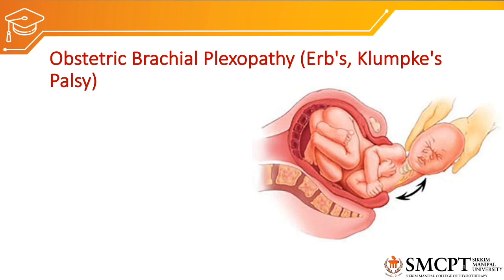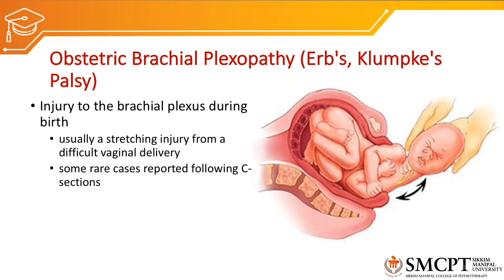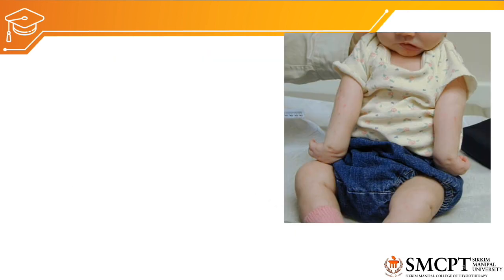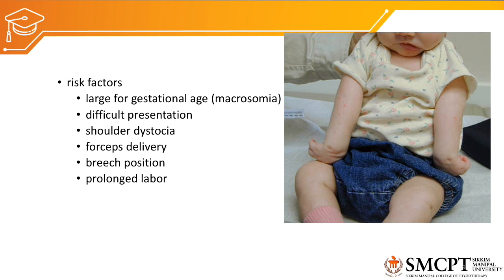The most common obstetric brachial plexus injuries are Erb's palsy and Klumpke's paralysis. Injury to the brachial plexus during birth is called obstetric brachial plexus injury, usually caused by a stretching injury from a difficult vaginal delivery — most commonly shoulder dystocia. Risk factors include macrosomia (fetus too large for gestational age), difficult fetal presentation, shoulder dystocia, forceps delivery, breech position, and prolonged labor.